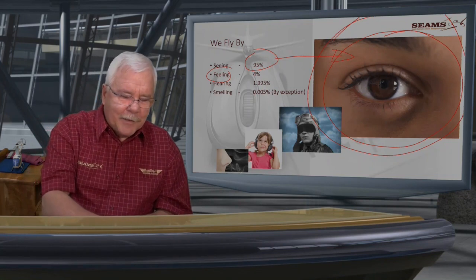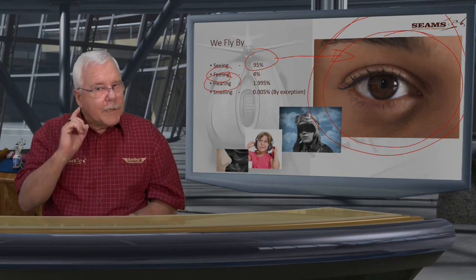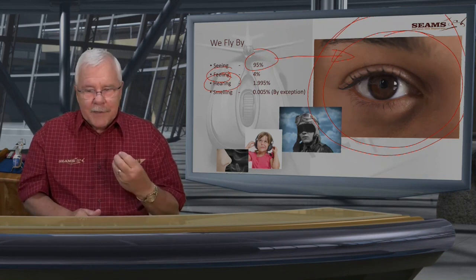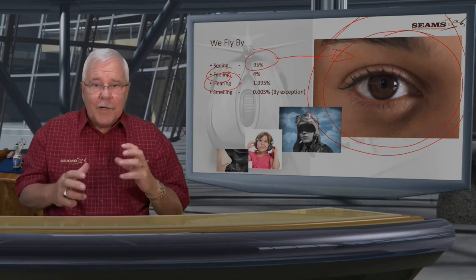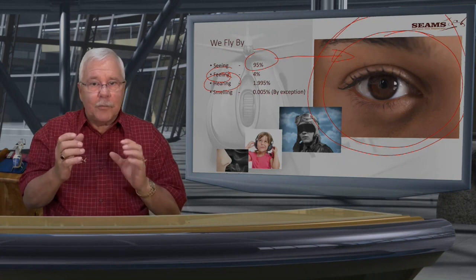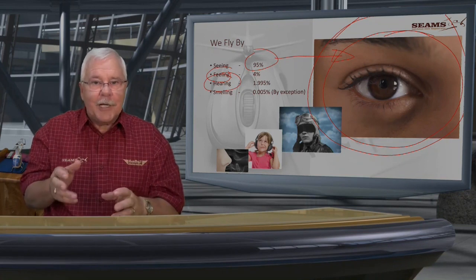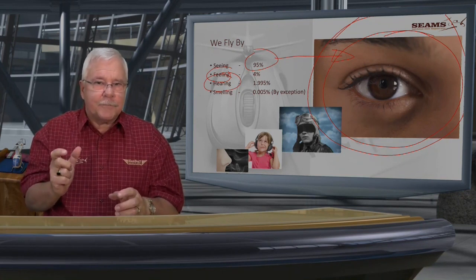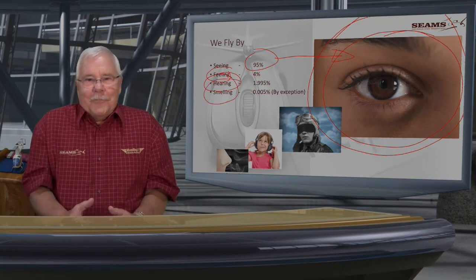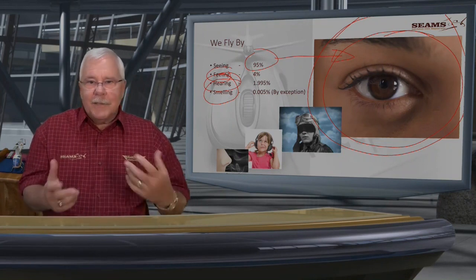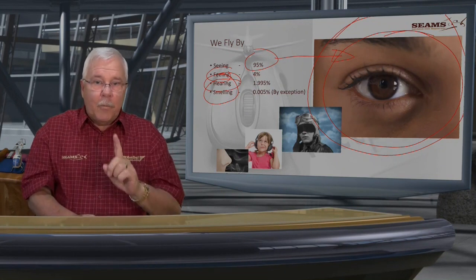Hearing is probably rated too high as a primary sense for flying, but we can hear engine noise changes. If you fly the same helicopter every day, you can hear the revs change — that's a great use of hearing. Smelling is by exception: you can smell smoke, and there are cases for that. But the primary physical ability to fly, number one, is sight.